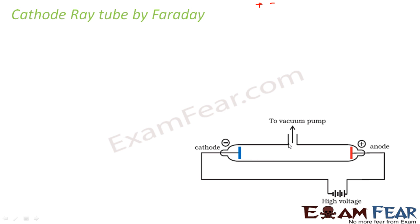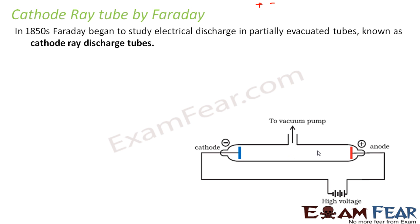The cathode ray tube is a tube which is a vacuum. It has two metals — one is cathode and one is anode — and they connect to a high voltage. In the 1850s, Faraday began to study the electrical discharge of these tubes, and this tube is called the cathode ray discharge tube.